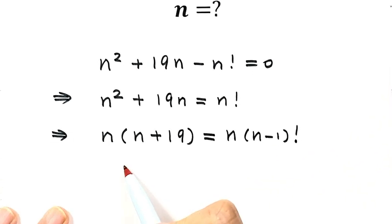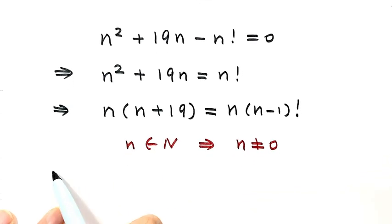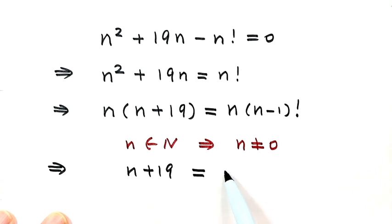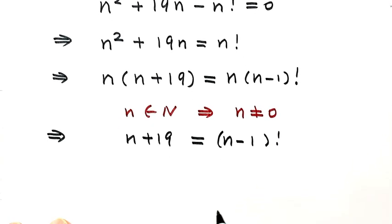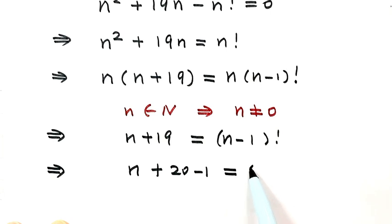Because n is a natural number, its minimum value is 1, meaning n is not equal to 0. So we can divide both sides by n. Then we have n plus 19 equals n minus 1 factorial. For 19, we can write it as 20 minus 1, so (n plus 20 minus 1) equals n minus 1 factorial.